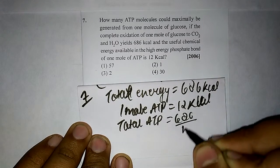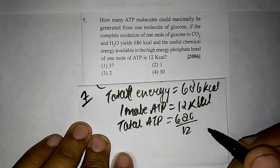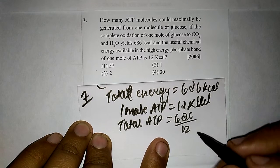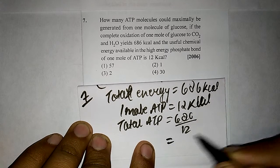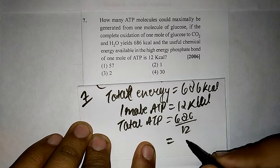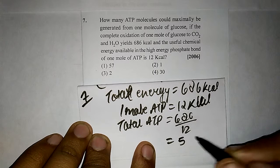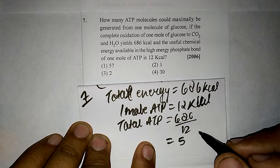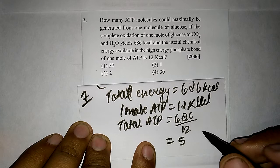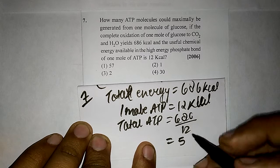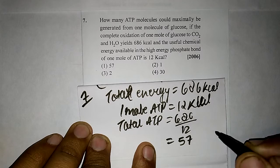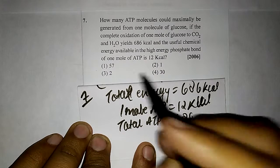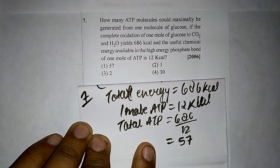686 divided by 12. When you solve it, the answer is approximately 57 — specifically 57 point something — which is approximately equal to 57. That corresponds to the first option.